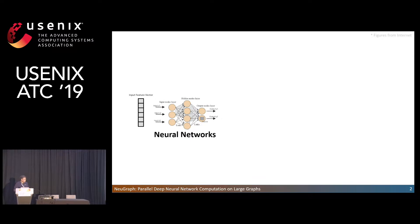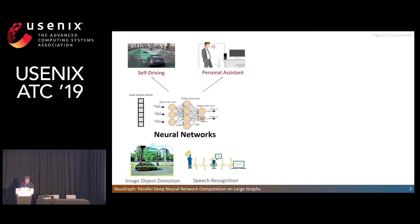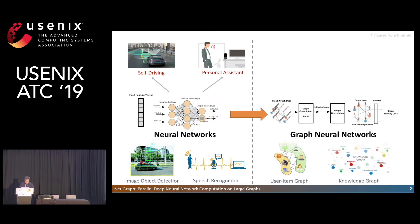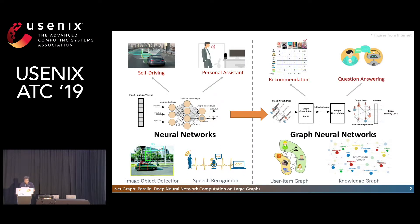Deep neural networks have achieved great successes in many areas. Recently, there is an emerging trend in applying deep learning on graphs, known as graph neural networks, and they have achieved convincing model accuracy in many real-world applications. For example, it can learn features from the user-item graph for higher quality recommendations.